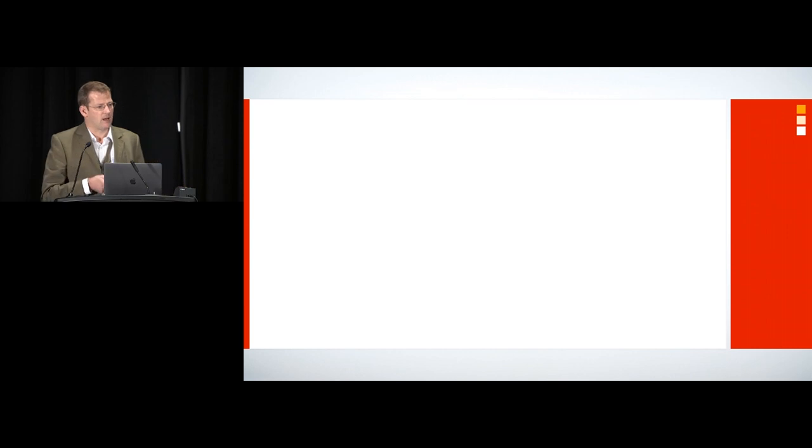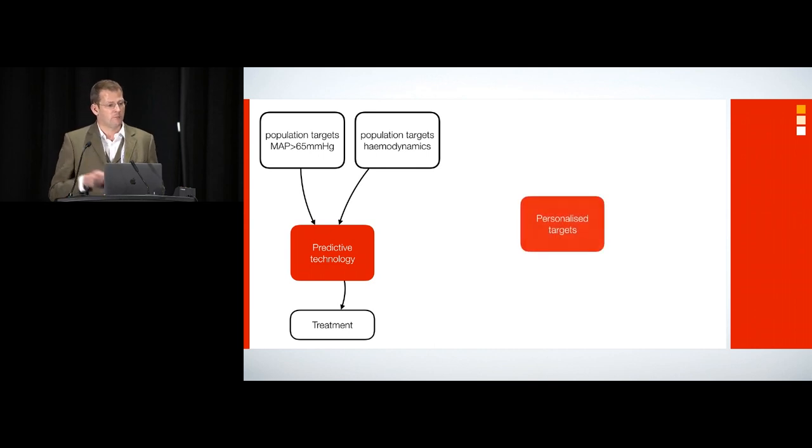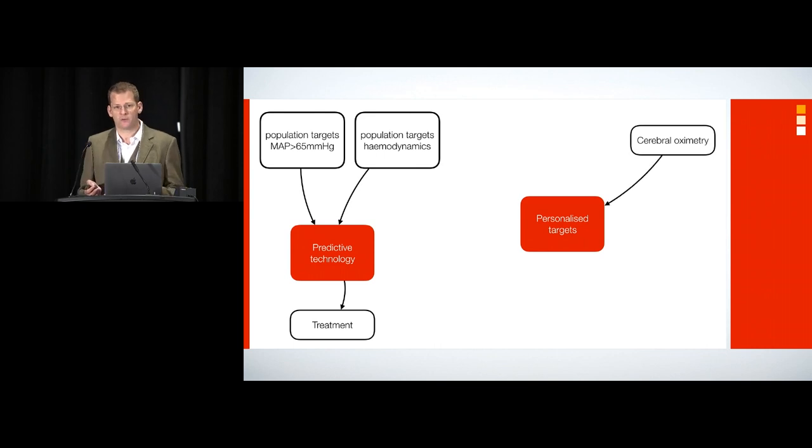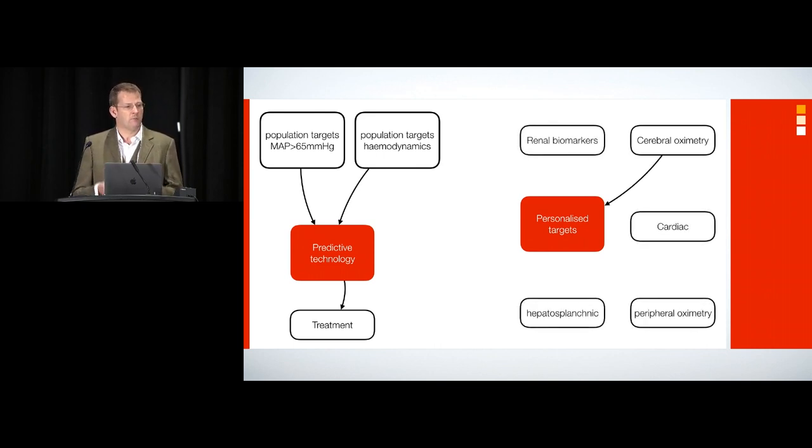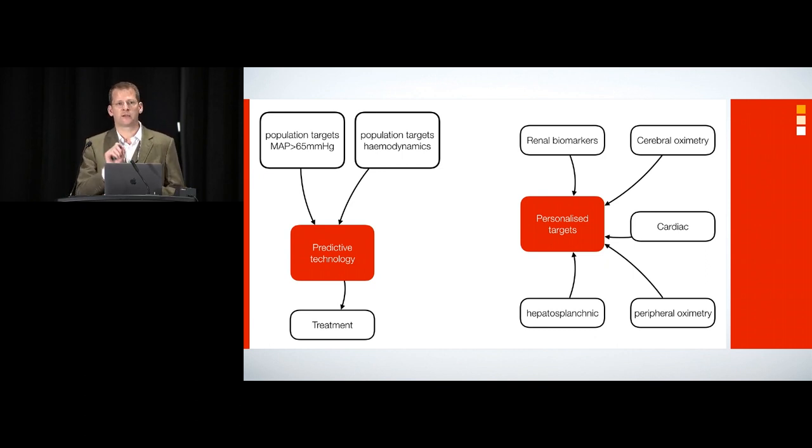Where are we now? At the moment, we have population targets, both in terms of MAP and hemodynamics. We feed this into our predictive technology and we get an output. We have a treatment so we can avoid hypotension. But moving forward, we need personalized targets. Cerebral oximetry is probably the first one of these. We can slave this into our algorithms, but there's other things we need to start looking at. There's real interest in real-time biomarkers at the moment. You can measure in real time, things such as NGAL or the ancient-like binding proteins that measure ischemic load in the kidney. This can be fed into algorithms. We can look at peripheral oximetry and we can look at hepatosplanchnic blood flow as well and microcirculation.